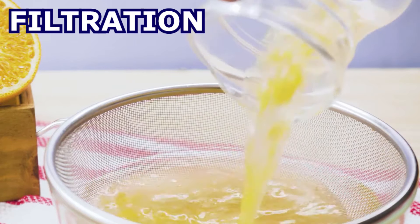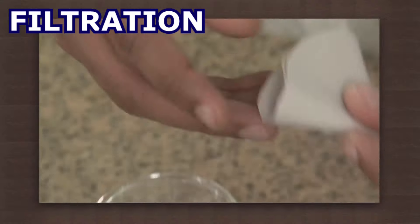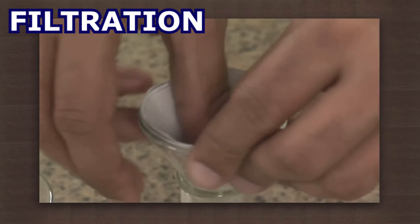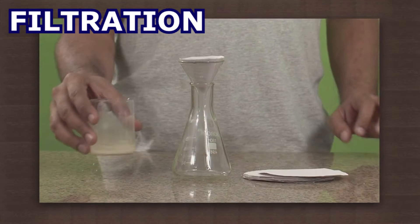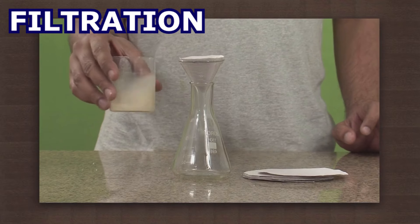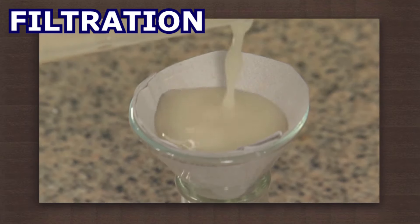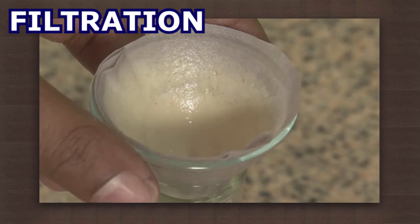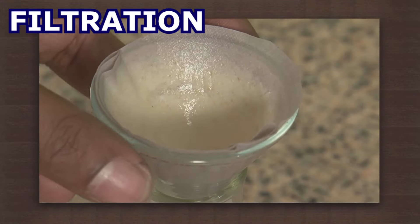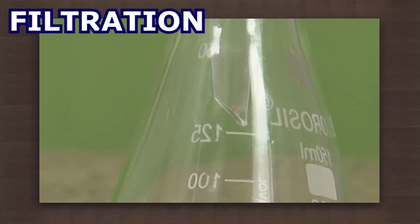The mixture is poured over a strainer or on porous paper called a filter. The solid component will remain in the filter whereas the liquid will pass through it.